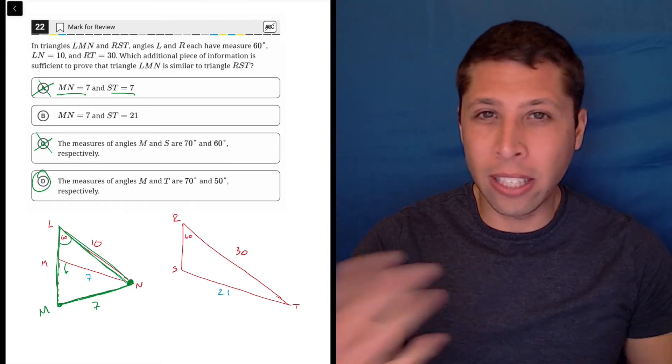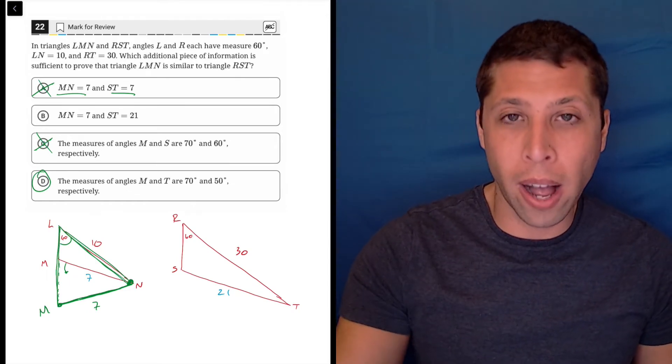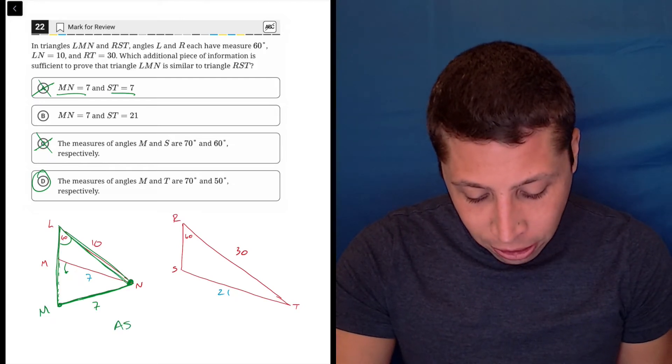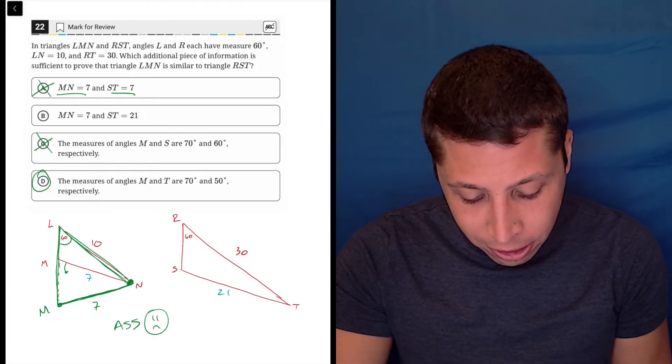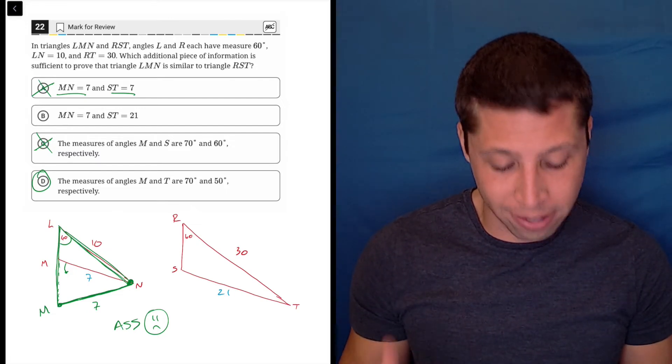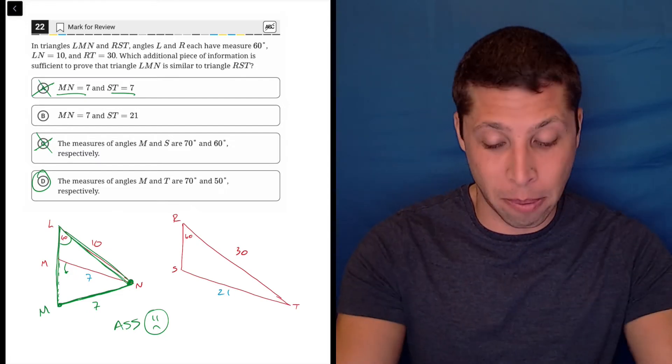And that's because this kind of exists also with congruent triangles, and it's why when we have angle, side, side triangles for congruency, it doesn't work, it doesn't prove them congruent. Don't be an ass is my little mnemonic to remember that.